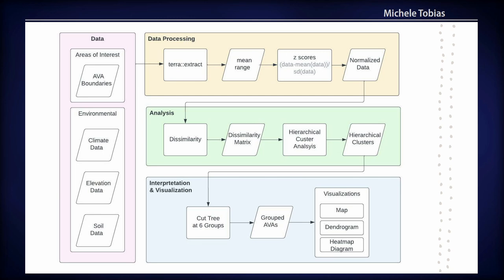The first thing I did was data processing. I used the Terra package to extract summary statistics out of the environmental data for each AVA boundary — things like the mean and the range for each dataset. Then I calculated a z-score, which you can think of as normalizing the data, turning everything onto the same general range. This is important because temperature, percent soil composition, and elevation have very different ranges, and without normalization something with a large number like elevation could skew the clustering.